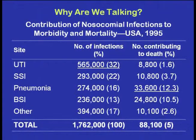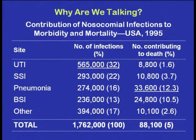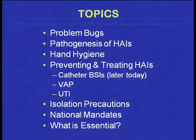The most common infection acquired in the hospital is a urinary tract infection, and the most common infection to kill patients in hospitals is nosocomial pneumonia. Today we're going to talk about problem bugs, the pathogenesis of HAIs, hand hygiene, preventing and treating HAIs, catheter-related bloodstream infections, isolation precautions, and what's essential.